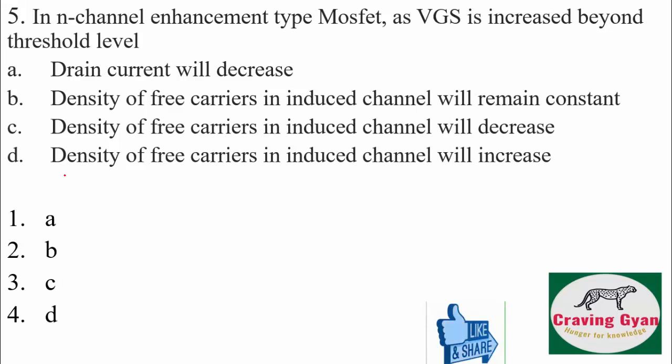Fifth question: in an n-channel enhancement type MOSFET, as VGS is increased beyond threshold voltage, the free charge density also increases and current also increases. The current in the saturation region equals μn·Cox·(W/L)·(VGS − VTH)²/2, and in the linear region it equals μn·Cox·(W/L)·[(VGS − VTH)·VDS − VDS²/2]. So current is a function of (VGS − VTH), hence option D is going to follow.